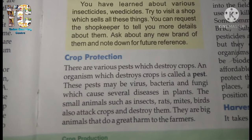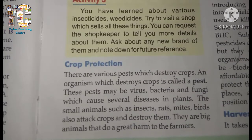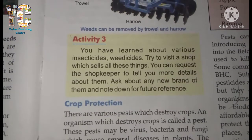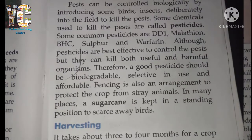Various pests destroy crops. An organism which destroys crops is called a pest. These pests may be viruses, bacteria, and fungi — microorganisms which cause several diseases in plants. Small animals such as insects, rats, mites, and birds also attack and destroy crops. Big animals like cows, dogs, buffaloes, donkeys, and pigs also run through fields and destroy crops.